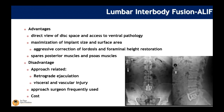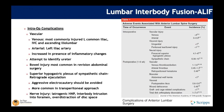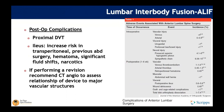ALIF advantages include a direct view of the disc space, access to ventral pathology, and the ability to maximize implant size and surface area for aggressive lordosis correction and foraminal height restoration. It is excellent for deformity correction and indirect decompression. Risks include retrograde ejaculation or visceral and vascular injury — venous injury occurs in approximately 4% of cases, arterial injury in 0–1%, and retrograde ejaculation due to sympathetic chain injury is a known risk.